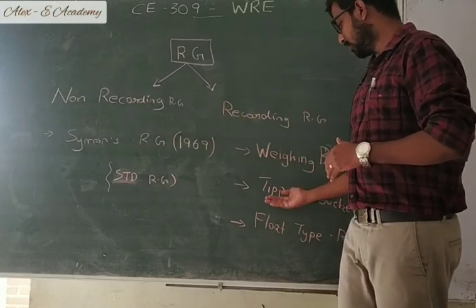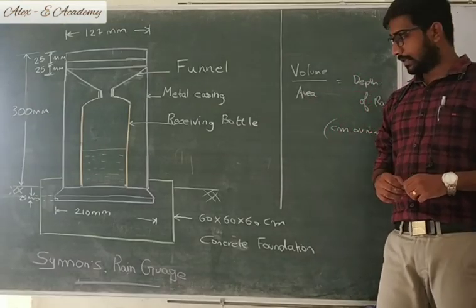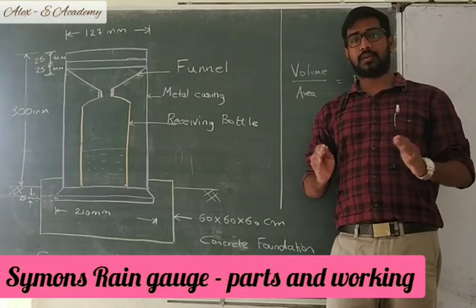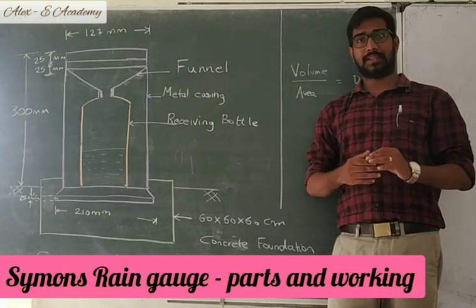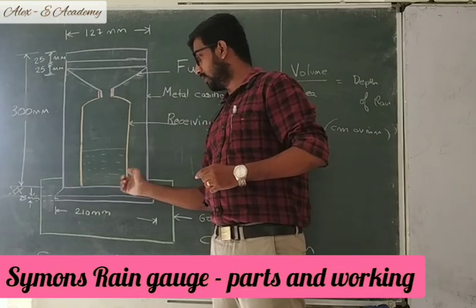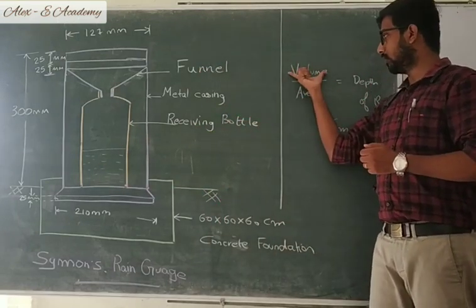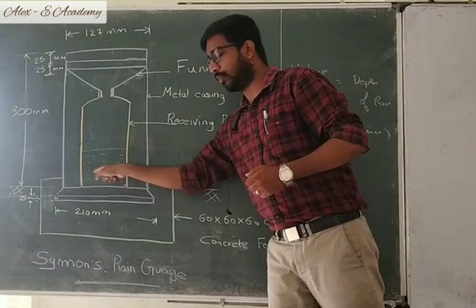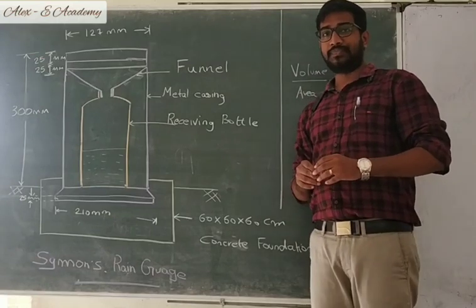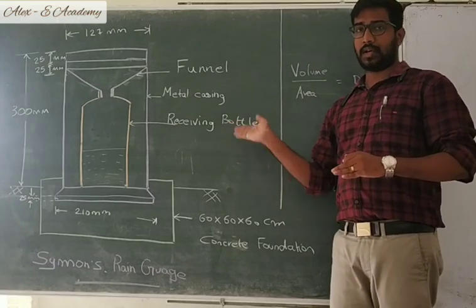Let's see non-recording type rain gauges, that is Simon's rain gauge, in detail. As the name indicates, non-recording type rain gauges do not record the rain data automatically. Rather, it just collects the rain. In Simon's rain gauge, the precipitation is collected in this receiving bottle, and this water is collected. We calculate the volume of water and divide it by the cross-sectional area of this bottle, then we get the depth of rainfall in centimeter or millimeter.